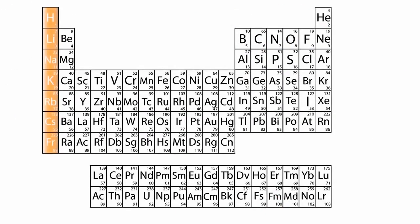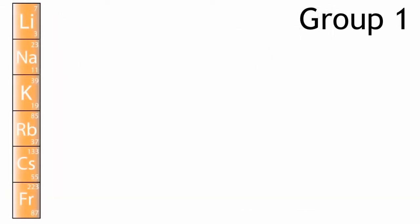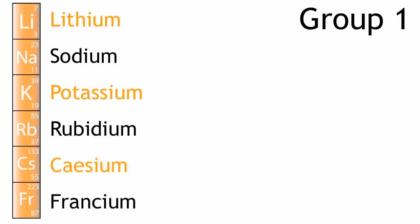We are going to look at group 1 as an example of the pattern you can see in the periodic table. Group 1 contains the elements lithium, sodium, potassium, rubidium, caesium and francium.